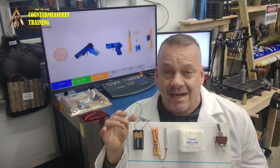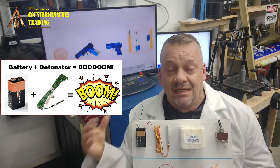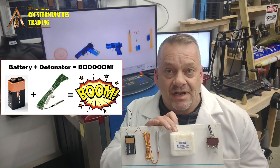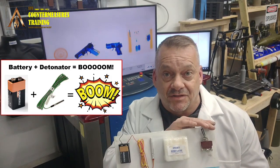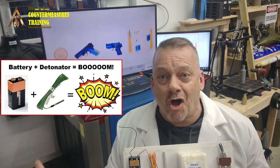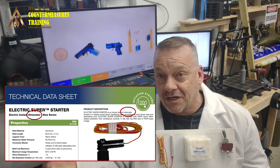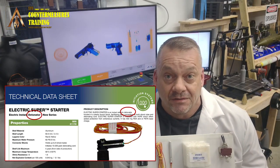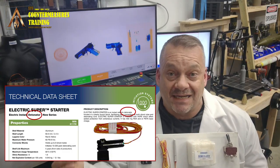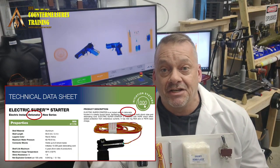The next issue: if you hook the detonator directly to the power source it goes off — that doesn't work, so again PIES based on how an IED is built does not match how it's going to be presented. The next term they use is 'initiator' — but you won't find that term on Dyno Nobel's website, Orica's website, or any company that manufactures explosives. It's going to be called a detonator or a blasting cap.